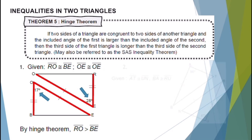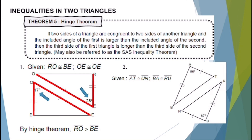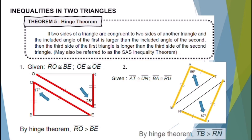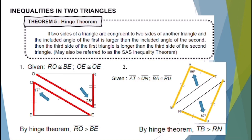For our second example, let's compare line segment TB and line segment RN. Given line segment AP congruent to UN and line segment BA congruent to RU — if angle A equals 96 degrees and angle U equals 87 degrees, then angle A is greater than angle U. By the Hinge Theorem, line segment TB is greater than line segment RN.